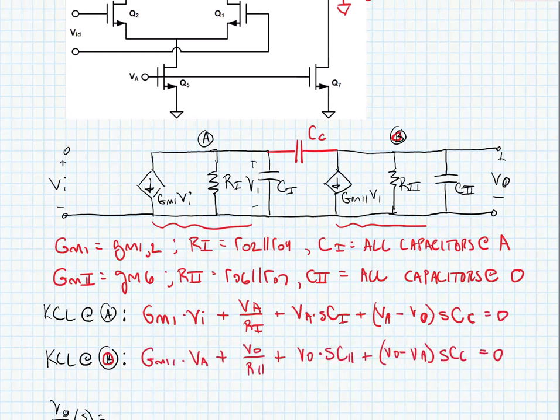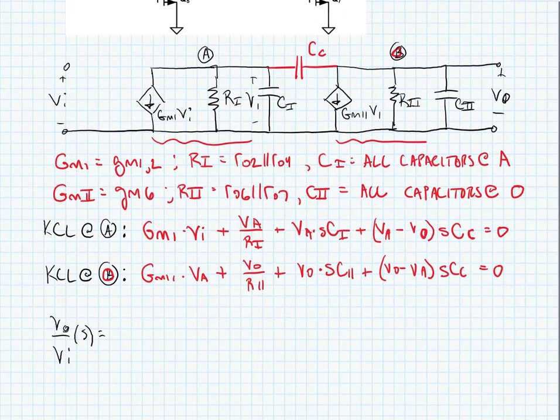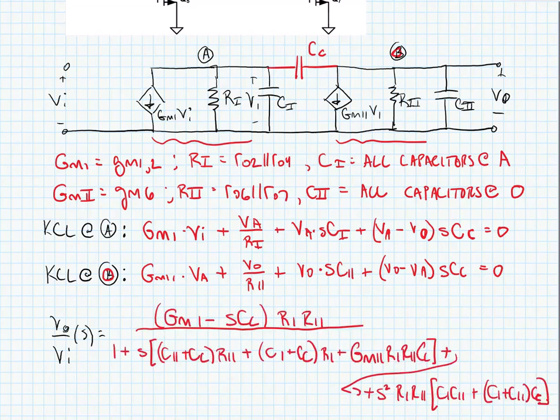Now we're going to solve for VO over VI as a function of frequency. And when we finish solving for Vout over VI, we should have an expression like this. We see a first order expression in the numerator, so we have a zero, and we see a second order expression in the denominator, so we have two poles.